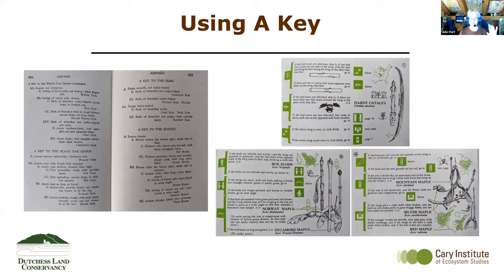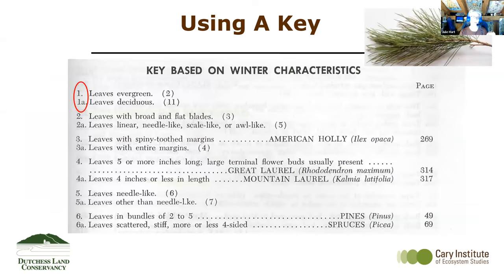The dichotomous key is structured in couplets — there's a question with two possible answers, and you pick the one that most clearly describes what you're looking at, which takes you to another question. If you think of it as a choose-your-own-adventure book, it's very much along that structure. Here's an example — we're going to key out the twig in the top right corner. Question number one: are the leaves evergreen or are they deciduous? Obviously these are evergreen — that takes us to number two.